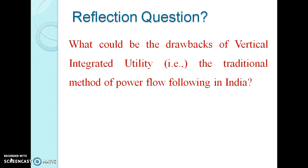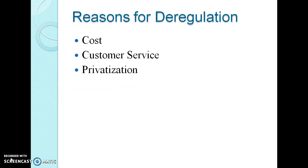I hope that now you all think of the answers. Let me discuss the drawbacks of vertical integrated utility. The drawbacks are cost, customer service, and private regulation. Since there is no competition, they only fix their own cost, and only the local utility has the right to sell power within the region. Since they have numerous consumers, they fail to service all of them in time. Also, the utility's business and operating practices must conform to guidelines and rules set by government regulators. For these reasons, people would like to go for the deregulated power system.